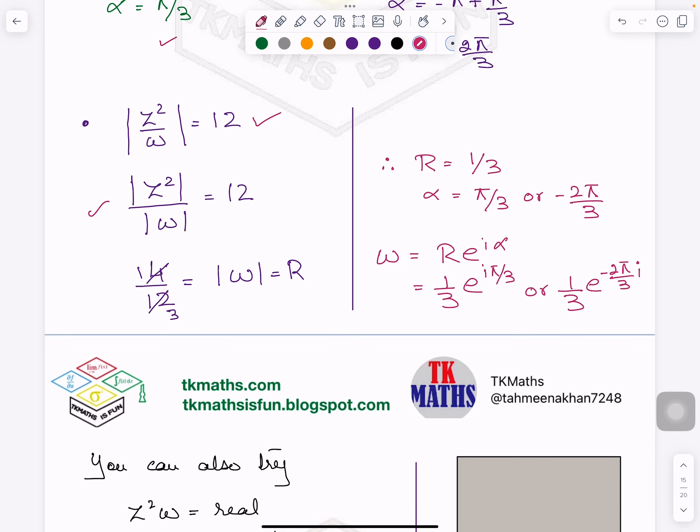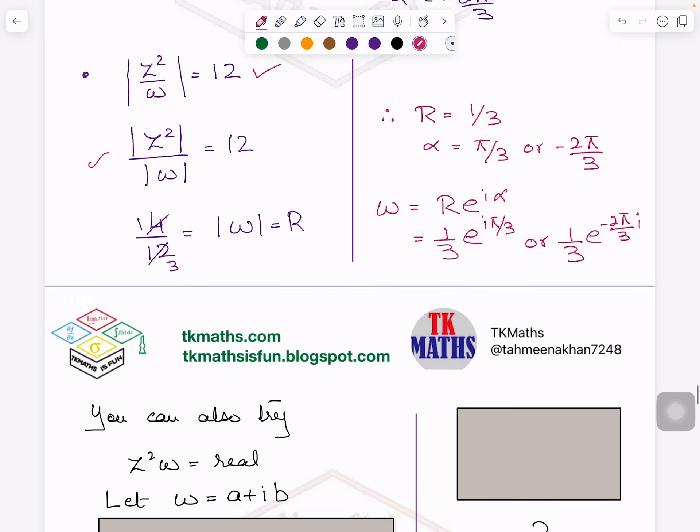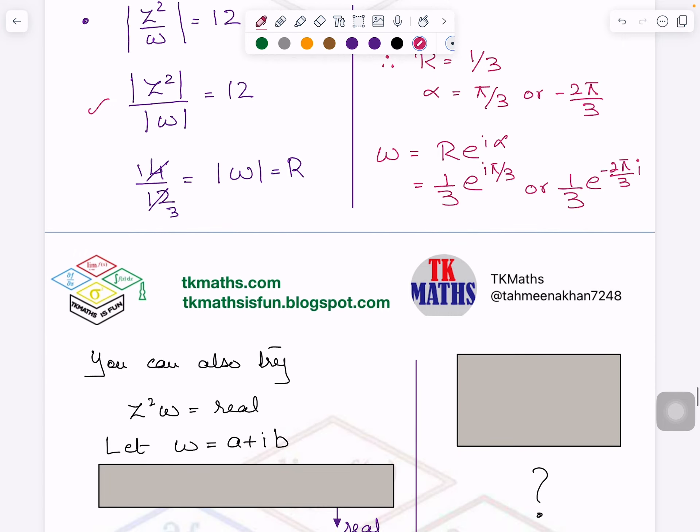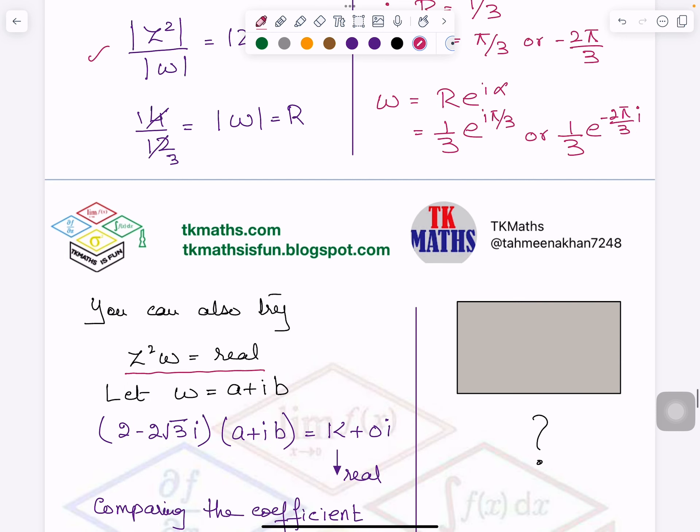Now the second method, which I want to tell you, it is very lengthy. But I have seen students doing like that also. It is not wrong, but very lengthy. Because this question was given to you, I mean this information was given in the question. So you can say, let ω equals A plus iota B. And then after that, you can multiply them. And it will equal to K plus 0 iota. Why did I write 0 iota? Because answer is real. So I have to take some letter.